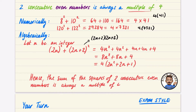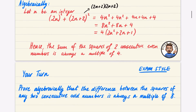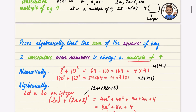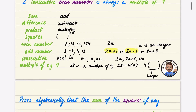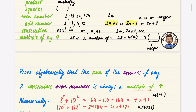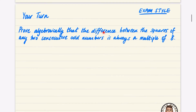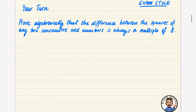Now here's one to have a go at — an exam-style question using keywords from our list. It says: prove algebraically that the difference between the squares of any two consecutive odd numbers is always a multiple of 8. This is very similar to the previous example. Pause the video and have a go.